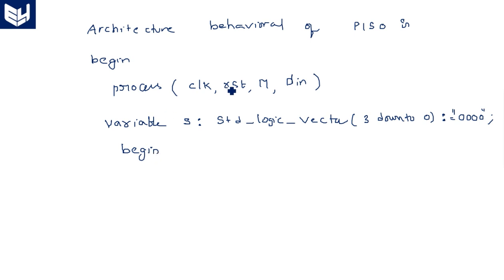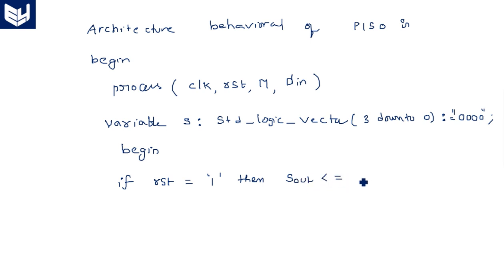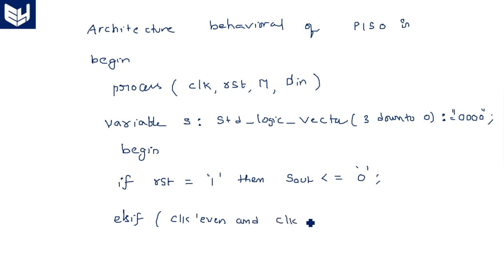Begin the process logic. First, if reset is equal to 1, all flip-flop outputs are cleared to zero — s_out is assigned zero. You should always write the reset condition first when a reset pin is present in the port. Else if, meaning reset is not active, we check: if clock'event and clock='1', that means there is a rising edge on the clock signal.